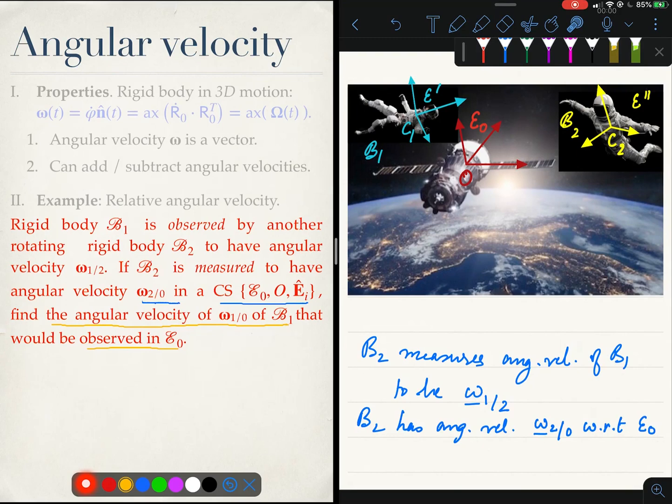Well, we know that angular velocity is a vector. Therefore, we can say that the angular velocity of body 1 with respect to the coordinate frame E0 is simply the angular velocity of body 1 with respect to body 2 plus the angular velocity of body 2 with respect to the coordinate frame E0, and that is my answer.